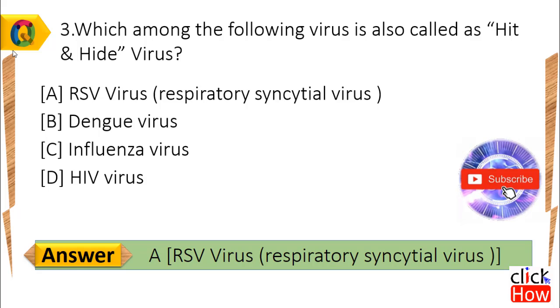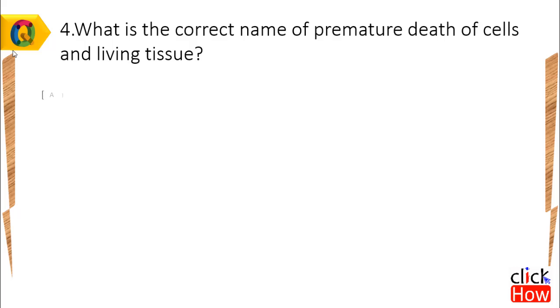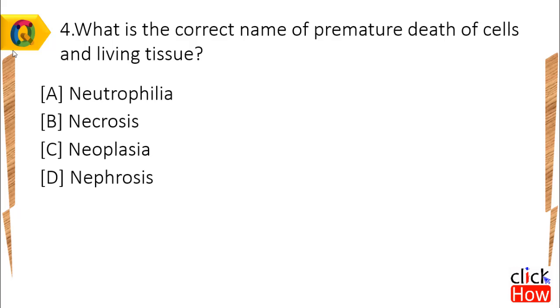Answer is A, RSV Virus. Question 4: What is the correct name of premature death of cells and living tissue? Option A) Neutrophilia, B) Necrosis, C) Neoplasia, D) Nephrosis.